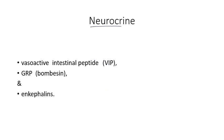Now moving to neurocrine hormones. We have already discussed that these are synthesized in the neurons of the GI tract, moved by axonal transport down the axon, and then released by action potential. The most important three neurocrines are VIP (vasoactive intestinal polypeptide), GRP (gastrin releasing peptide), and enkephalins.